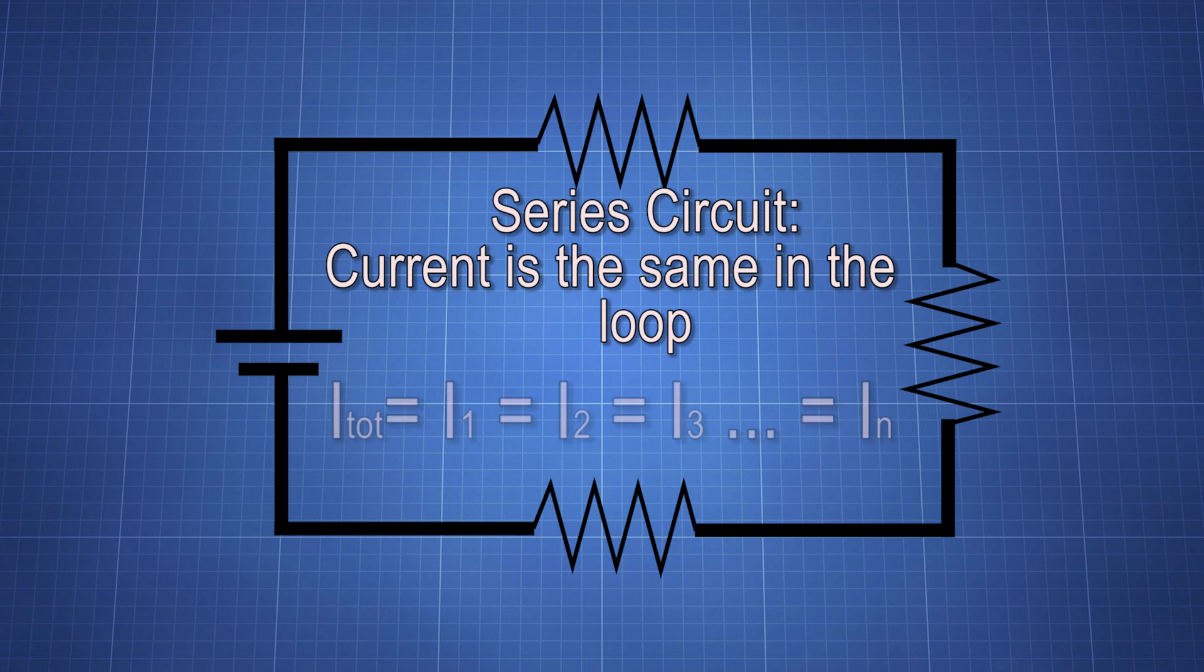Because it's a single loop, the current has to be the same through the whole thing. Remember the water analogy? It's the same electricity that's moving through that loop, right? So the current has to be the same everywhere.